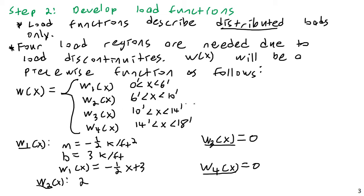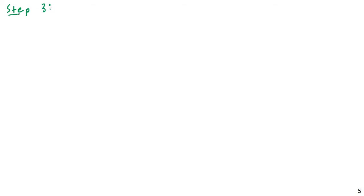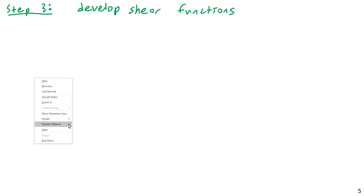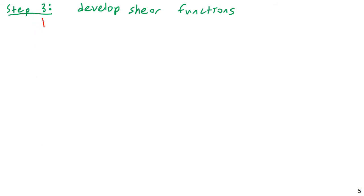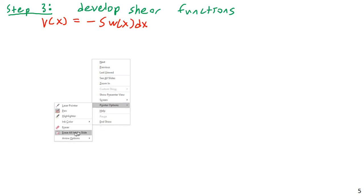Step three is to develop the shear functions v1(x), v2(x), v3(x), and v4(x). All of these are based on the formula v(x) = −∫w(x) dx, which we saw in the previous lesson.